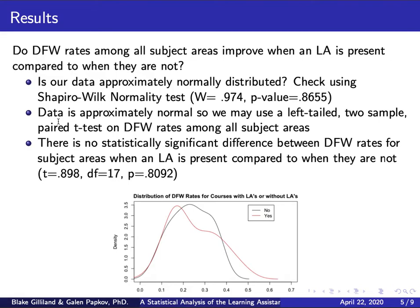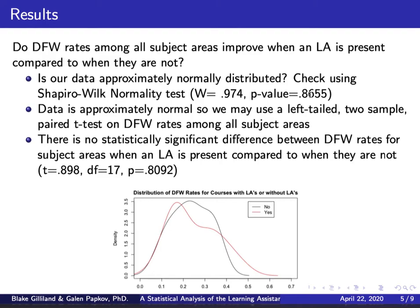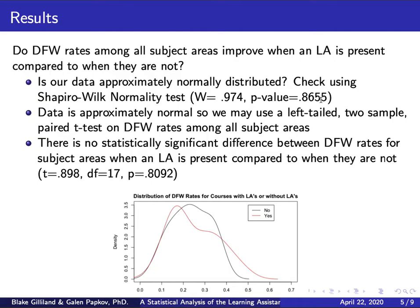We want to see whether those differences across all courses are normally distributed. We get a test statistic of 0.974 and a p-value of 0.8655. Since we fail to reject the null hypothesis — which states the data is normally distributed — we can assume normality and proceed with a parametric test: specifically a left-tailed, two-sample paired t-test.